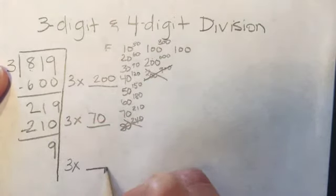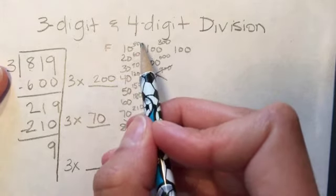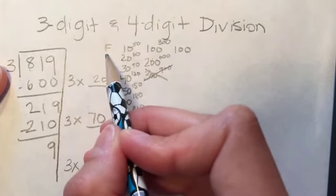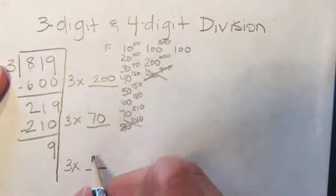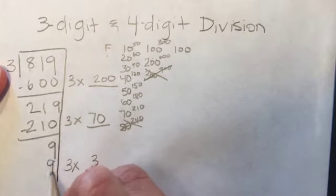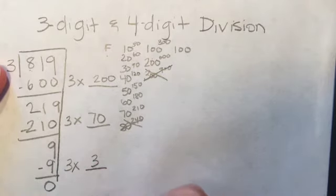So then I'm gonna say, 3 times what is 9 or as close as I can get to 9? Well, 3 times 10 is 30, which is way too much. So I'm gonna go back and I'm gonna think about my facts. What fact do I know that can get me as close as I can to 9? Well, 3 times 3, which is 9, and then I subtract and I get 0.